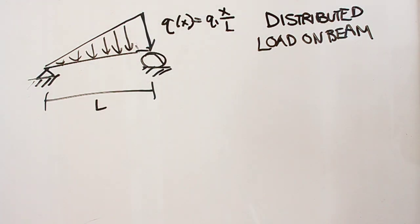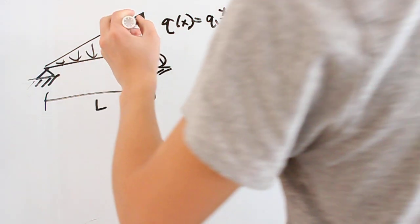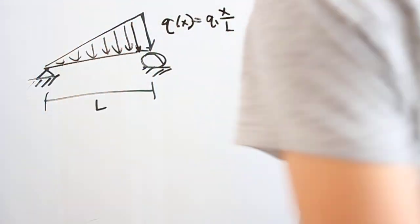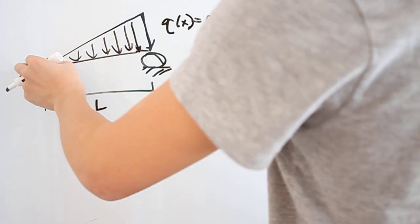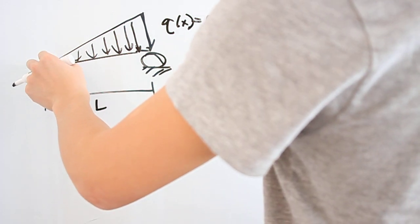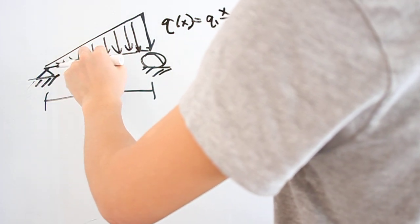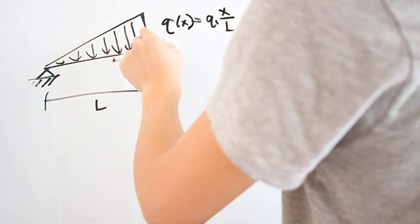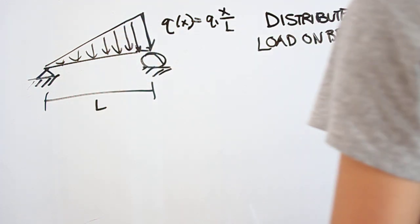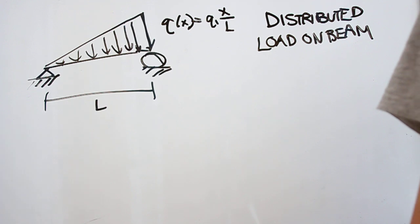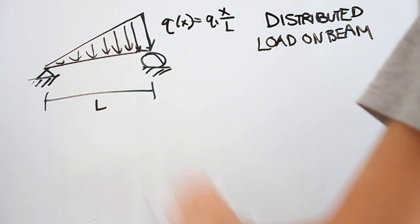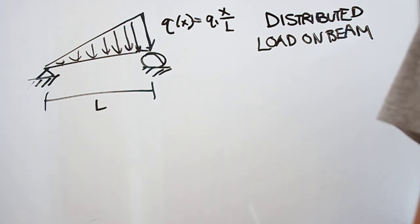Another statics problem involves a distributed load on a beam. In this problem, we have a special kind of distributed load which looks like a triangle. What that means is at this point there's no force, then there's a little more force, and a little more, until you get the maximum force right at the edge. It's hard to imagine why you might have a distributed load like this, but we'll look at real-life examples in later problems.